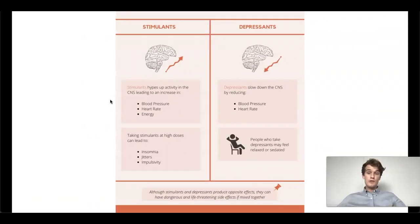Okay, so the first thing that you need to understand is that there are three broad classifications of drugs for the MCAT. The first being stimulants, second is depressants, and third is hallucinogens.